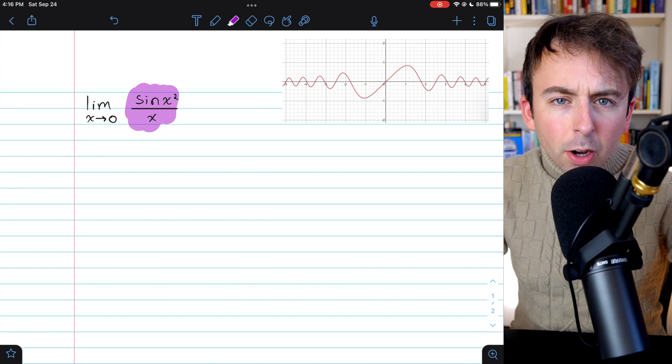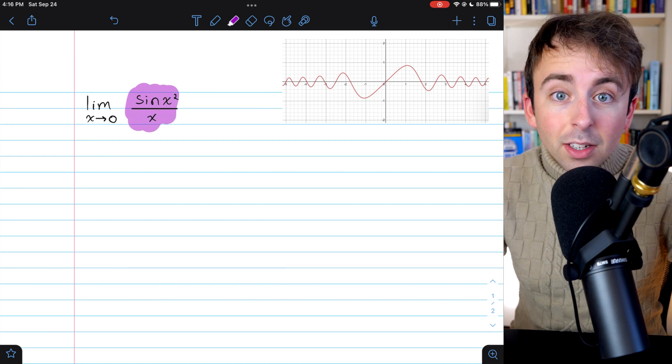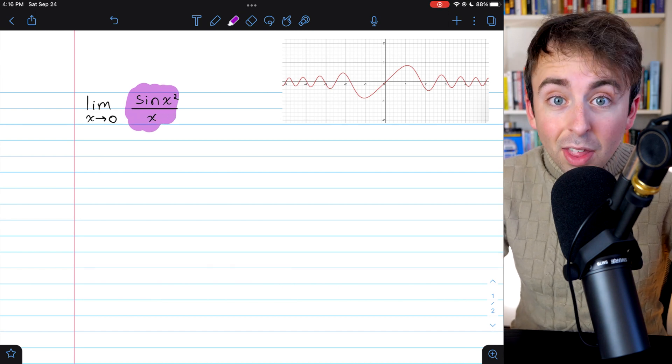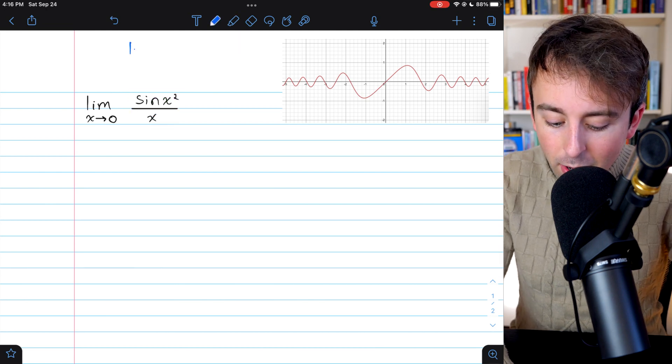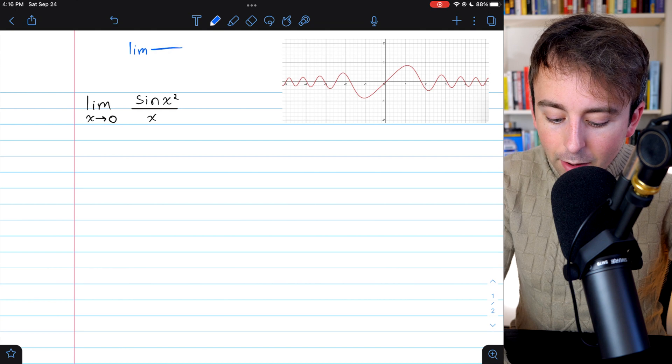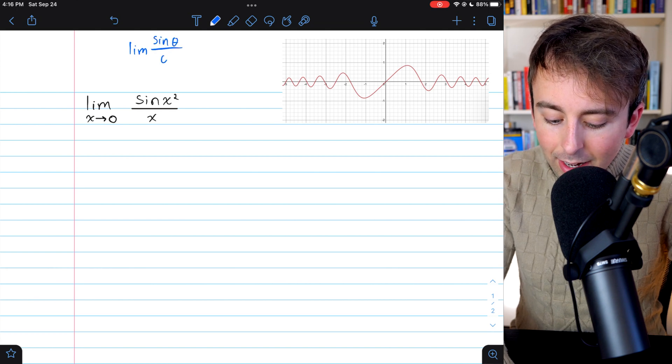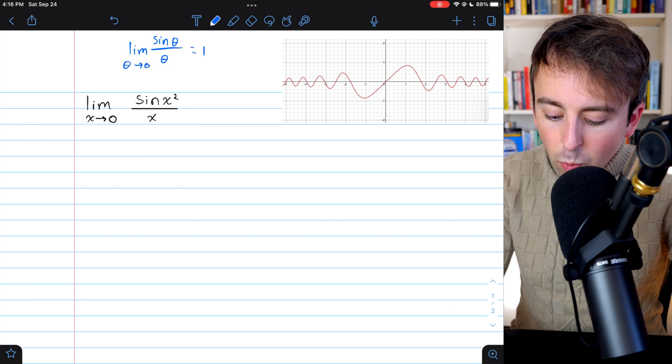It looks pretty close to sine of a thing divided by the thing with the thing approaching zero. That's a famous limit that we know. If we have the limit of sine theta over theta with theta approaching zero, this limit's equal to one.